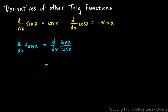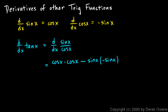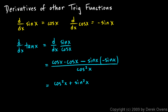So we'll apply the quotient rule — low d high minus high d low over low low. Low here is cosine x times the derivative of what's up top, the derivative of sine, which is also cosine x. That's low d high minus high, which is sine x, times the derivative of what's down low — the derivative of cosine, which is negative sine x — all over cosine squared x.